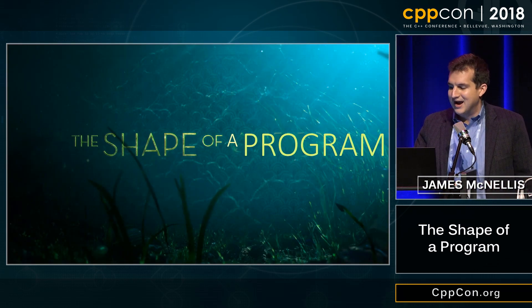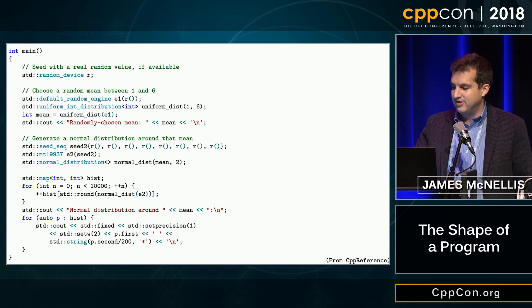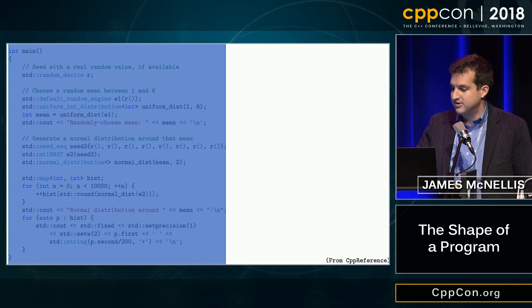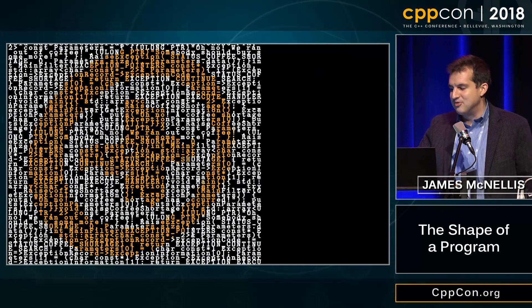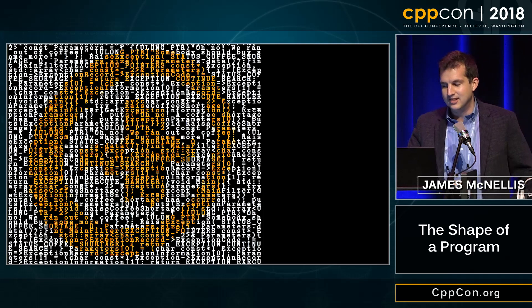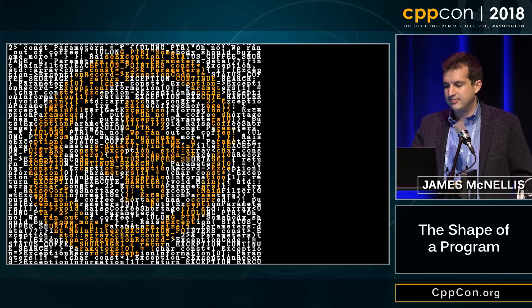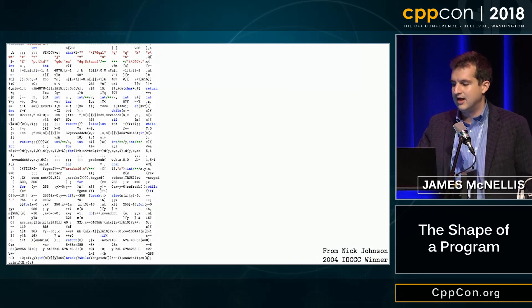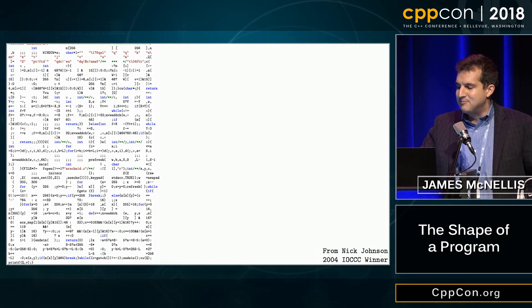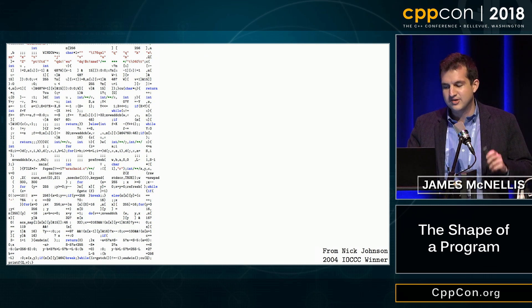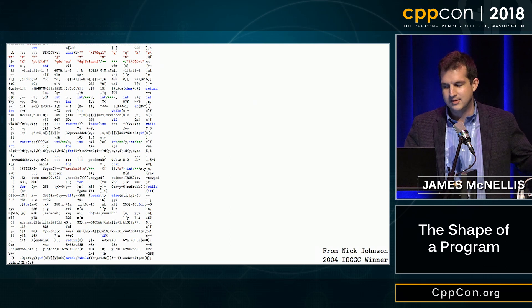Programs come in different shapes. For example, this program is rather square-shaped. And here we have a program in the shape of the CppCon logo. A great place to find programs in interesting shapes is the International Obfuscated C-Code Contest. My personal favorite is this program, which is a maze game in the shape of a maze that consumes itself as its own input.